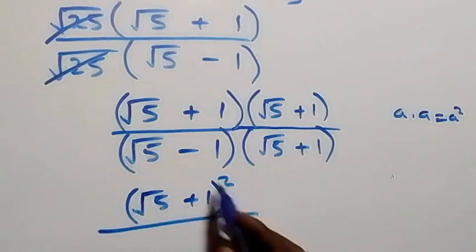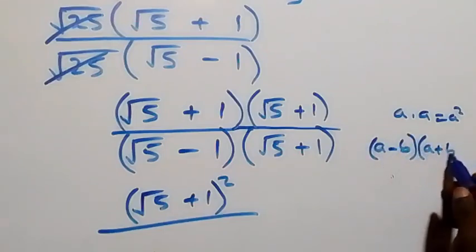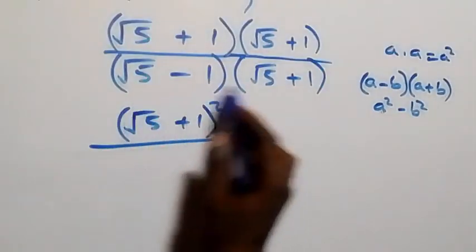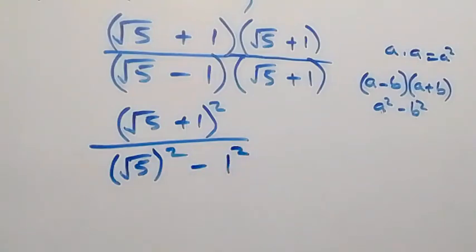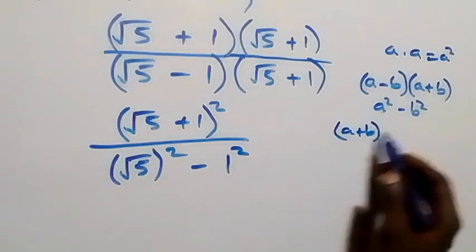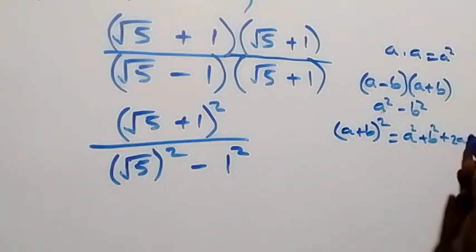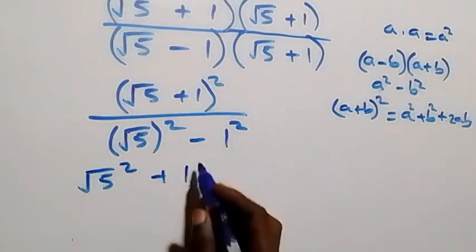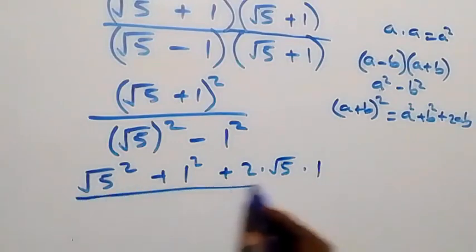The denominator follows the form A times A minus B times B, which is simply A squared minus B squared. So the denominator becomes root 5 squared minus 1 squared. The numerator expansion of (a plus b) squared is a squared plus b squared plus 2ab, giving us root 5 squared plus 1 squared plus 2 times root 5 times 1.